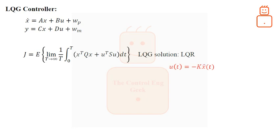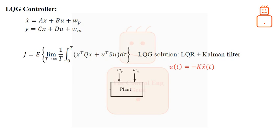Thus, the next step would be finding an optimal estimate of the process. The optimal state estimate is given by a Kalman filter, which is independent of matrices Q and S defined in the cost function. At this point, we can see that the LQR problem is designed independently from the involved noise, while the Kalman filter is designed independently from the cost function of the LQR. This is the main contribution of the separation theorem. We therefore see that the LQG problem and its solution can be separated into two distinct parts, as illustrated in the following.